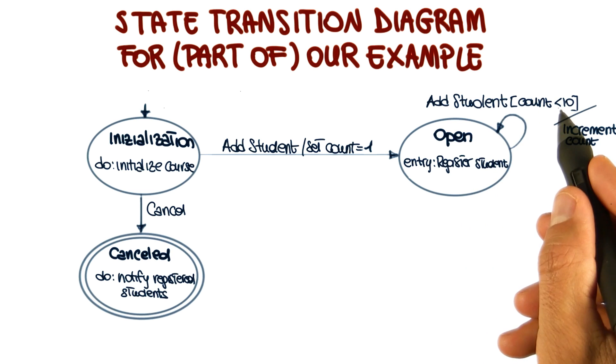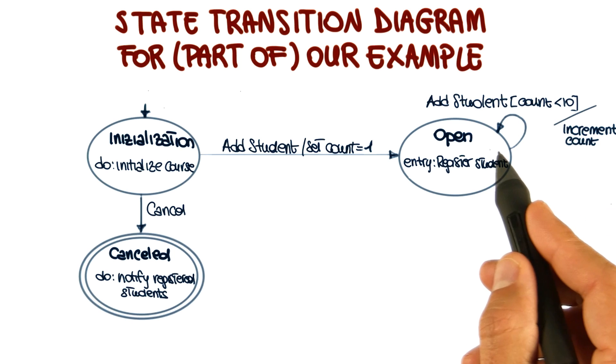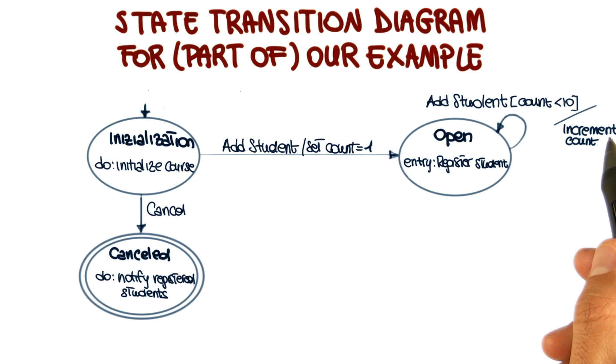So if that happens, if the count is less than 10, then the count is incremented. So the increment count action takes place, and the system goes back into the open state, and the new student is registered.